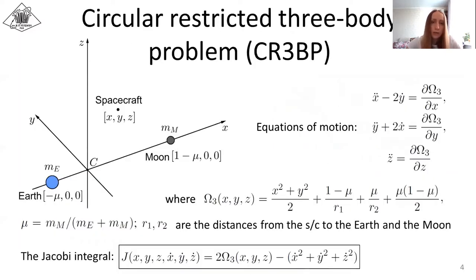So now, let us briefly describe the models of motion that underlie the WSB trajectory's design. The circular restricted three-body problem models the motion of a spacecraft of negligible mass under the gravitational field of the Earth and the Moon, that are revolving in circular orbits around their center of mass. In a dimensionless system of units and standard rotating reference frame, the spacecraft equations of motion may be written in the following form.